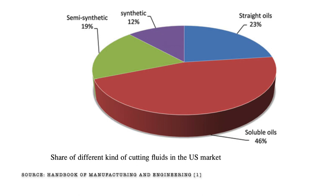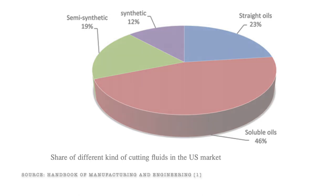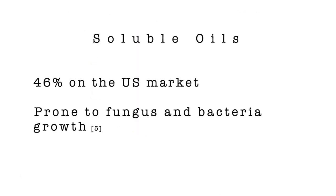As we can see by this chart, soluble oils are the most common cutting fluids in the United States at 46%, followed by straight oils at 23%, then semi-synthetic oils, and finally synthetic oil at 12%. The biggest problem with soluble oils is that they're prone to fungus and bacteria growth.